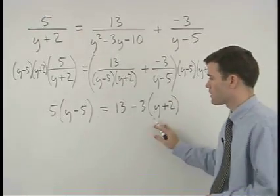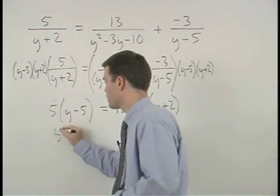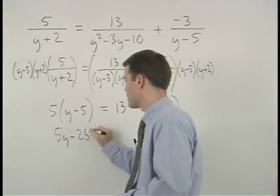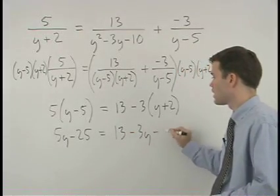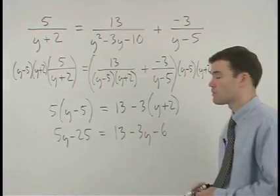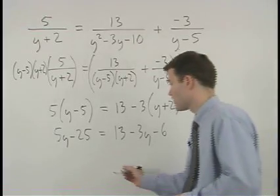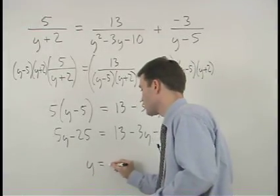Distributing through the parentheses we have 5y minus 25 equals 13 minus 3y minus 6 and solving from here we find that y equals 4.